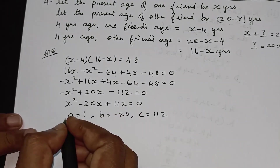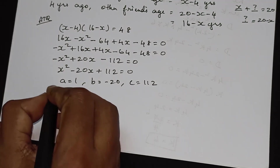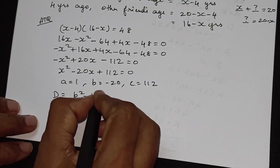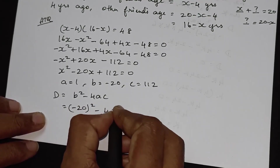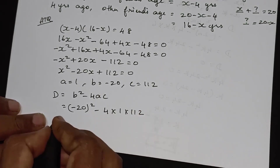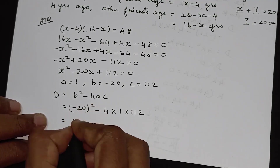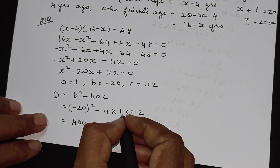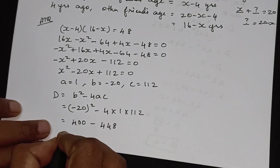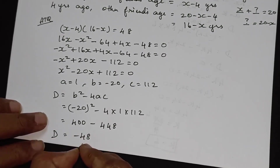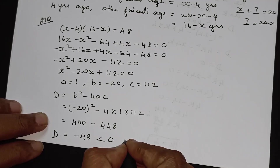Using the discriminant formula: D is equal to b² − 4ac. So D equals (−20)² − 4 × 1 × 112, which is 400 − 448, giving D equal to −48.